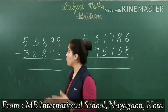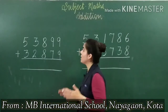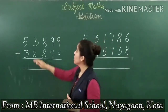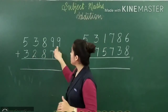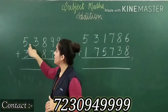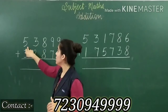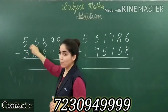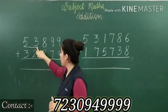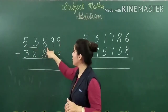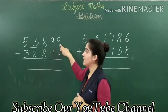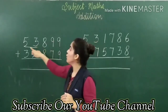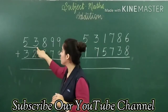Let's start with the first example. Here you can see that we have two addends. The place values are ones, hundreds, thousands, ten thousands. We will read it together: fifty-three thousand, eight hundred, ninety-nine. So the first addend is fifty-three thousand, eight hundred, ninety-nine.